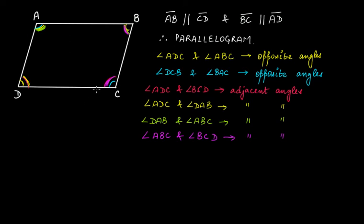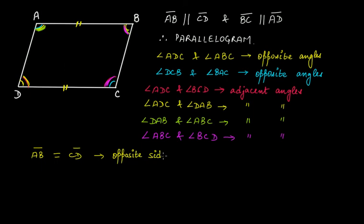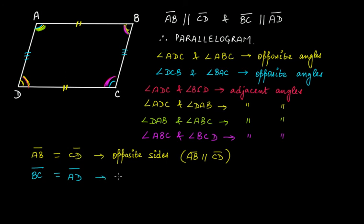Now looking at line segment CD and line segment AB — these two are parallel to each other, they are opposite sides, and they are also equal to each other. So side AB equals side CD. Similarly, side BC and side AD are parallel to each other and are also equal — so side BC equals side AD. These are opposite sides.